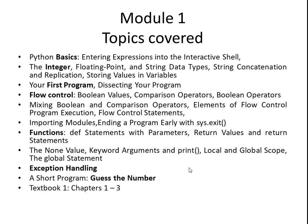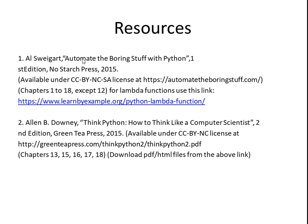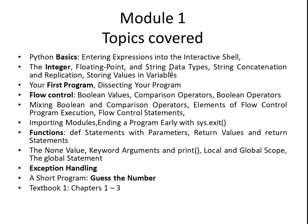In the next session, we'll move on to module one. The topics covered include Python basics, different data types, writing the first program, understanding flow control and Boolean comparison operators, functions, arguments, keywords, global statements, and exception handling. Finally, we'll write a short program. For module one, you need to refer to chapters one, two, and three from the first textbook — 'Automate the Boring Stuff with Python'. Thank you.